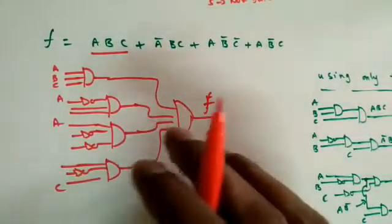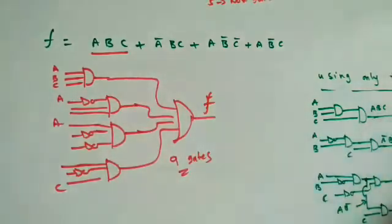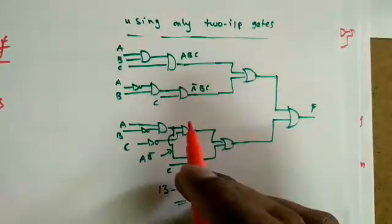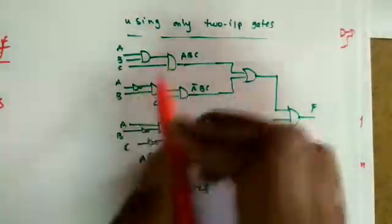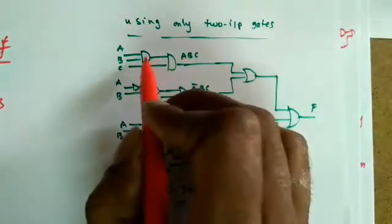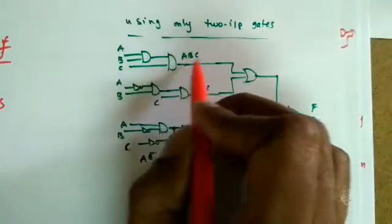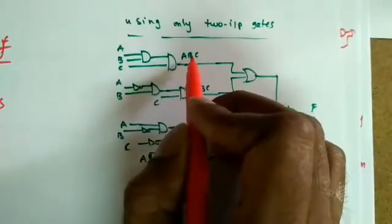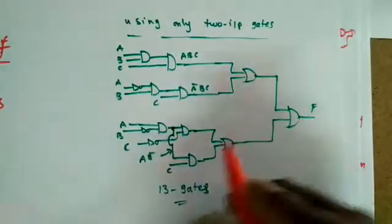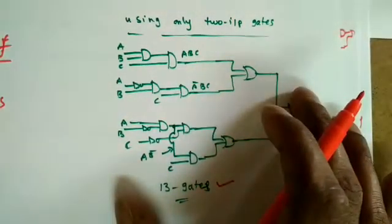If we don't have three-input gates and must use only two-input gates, then to implement ABC we need two AND gates, and so on — making a total of 13 gates required to implement this function without minimization.